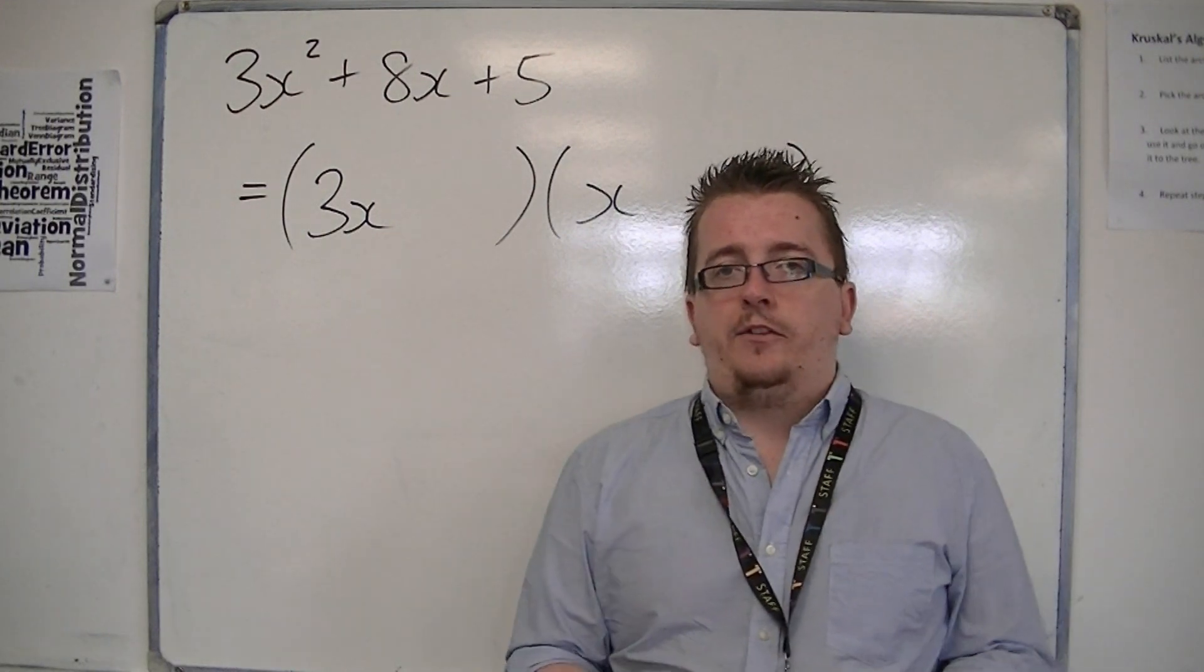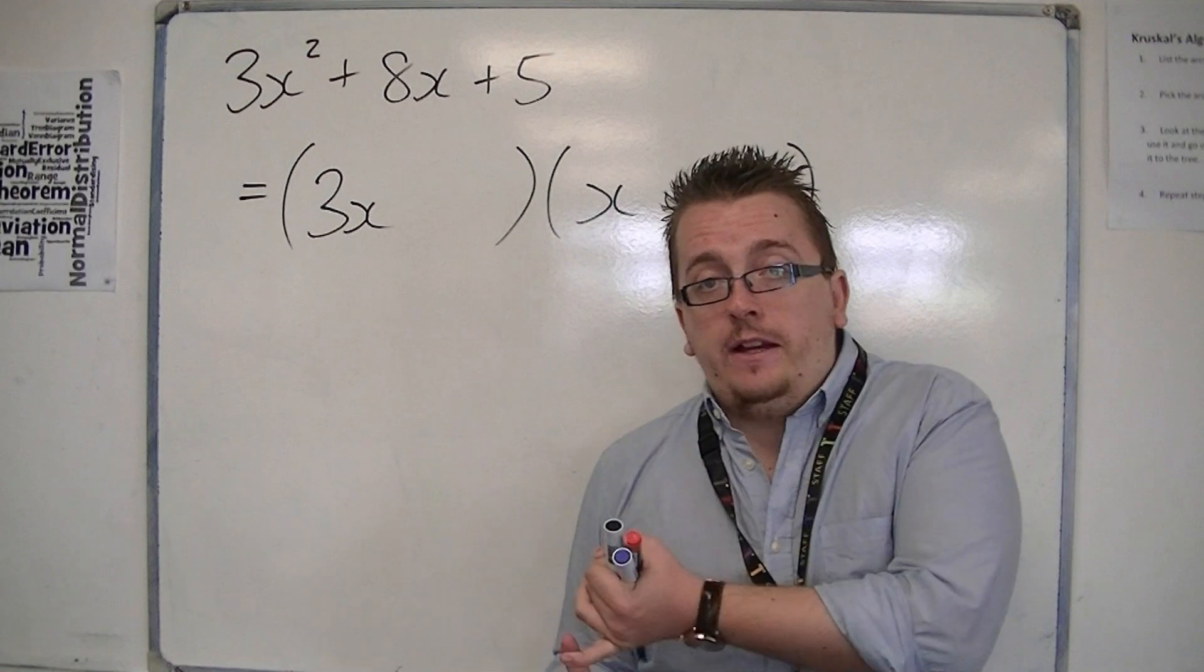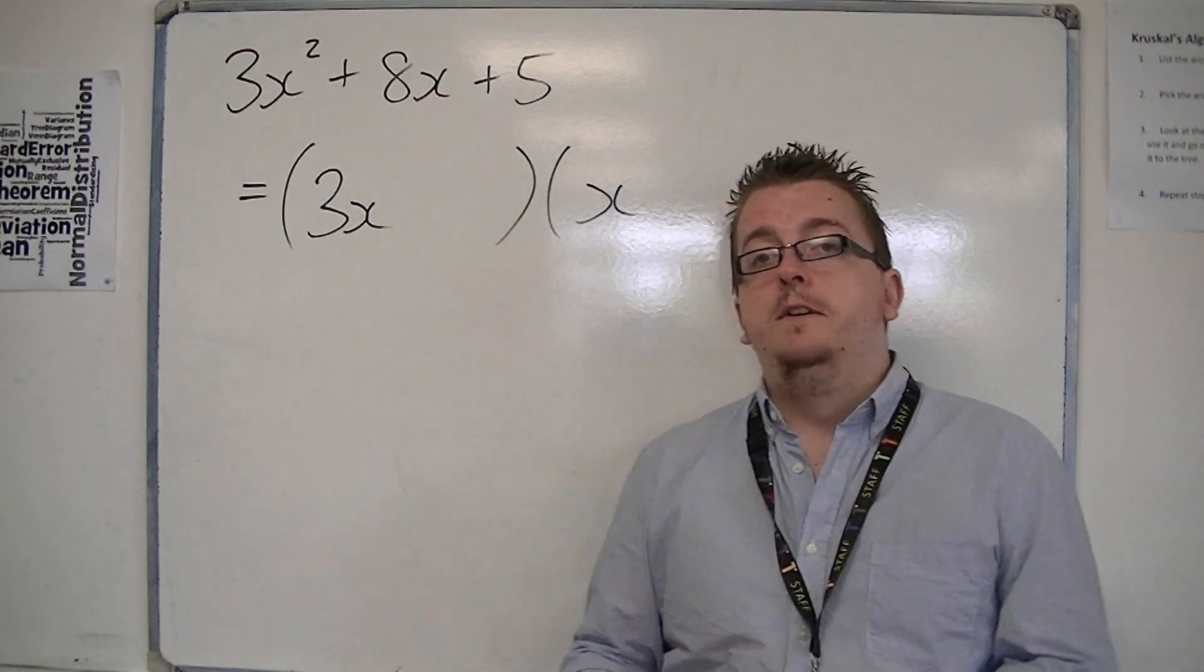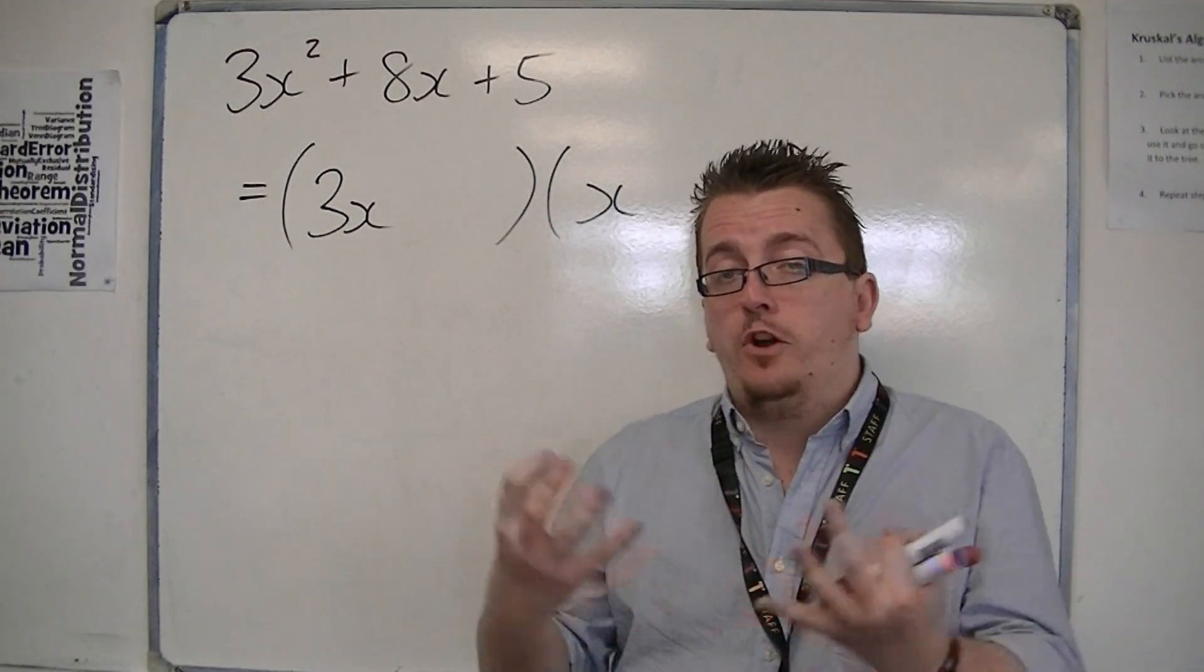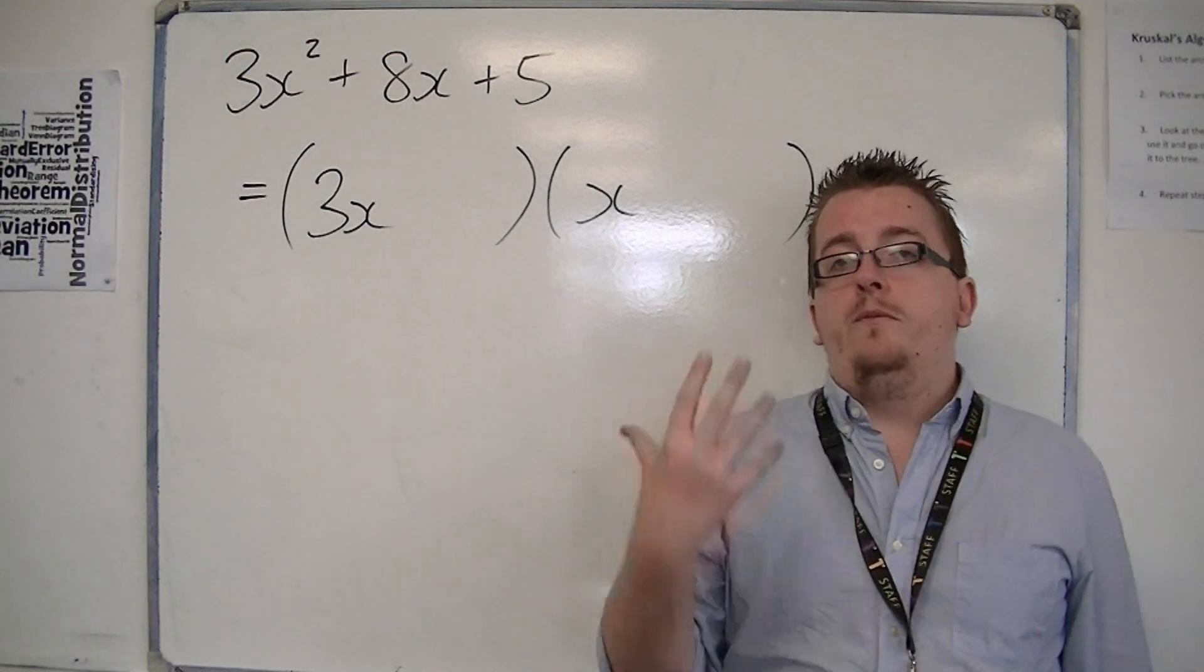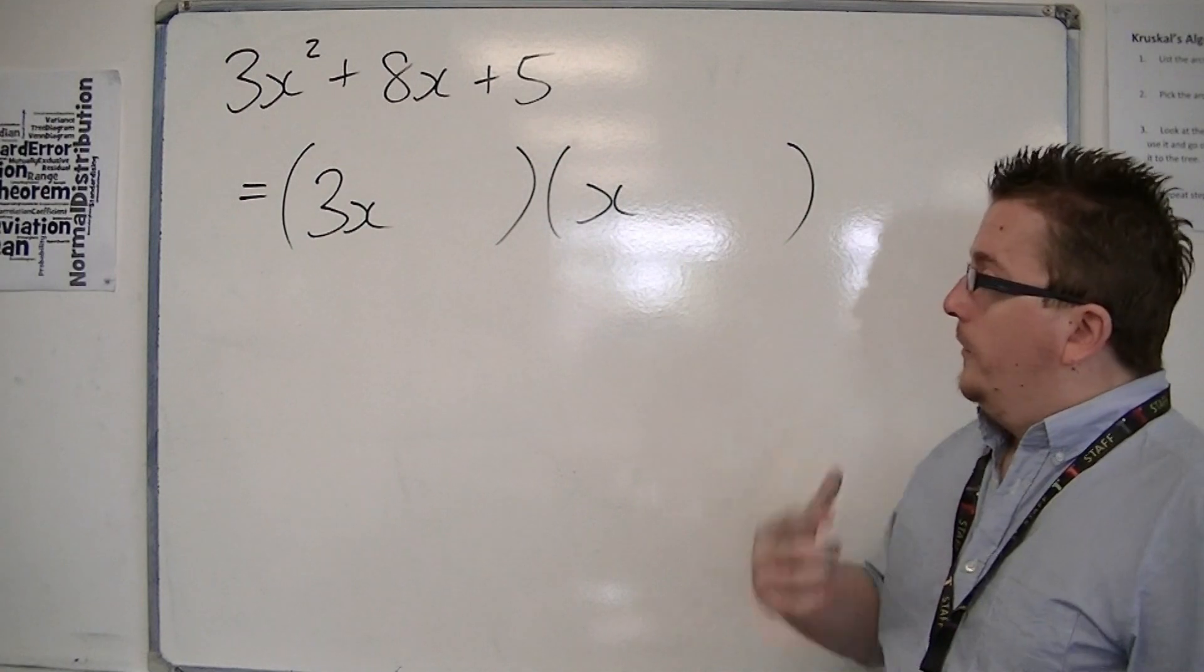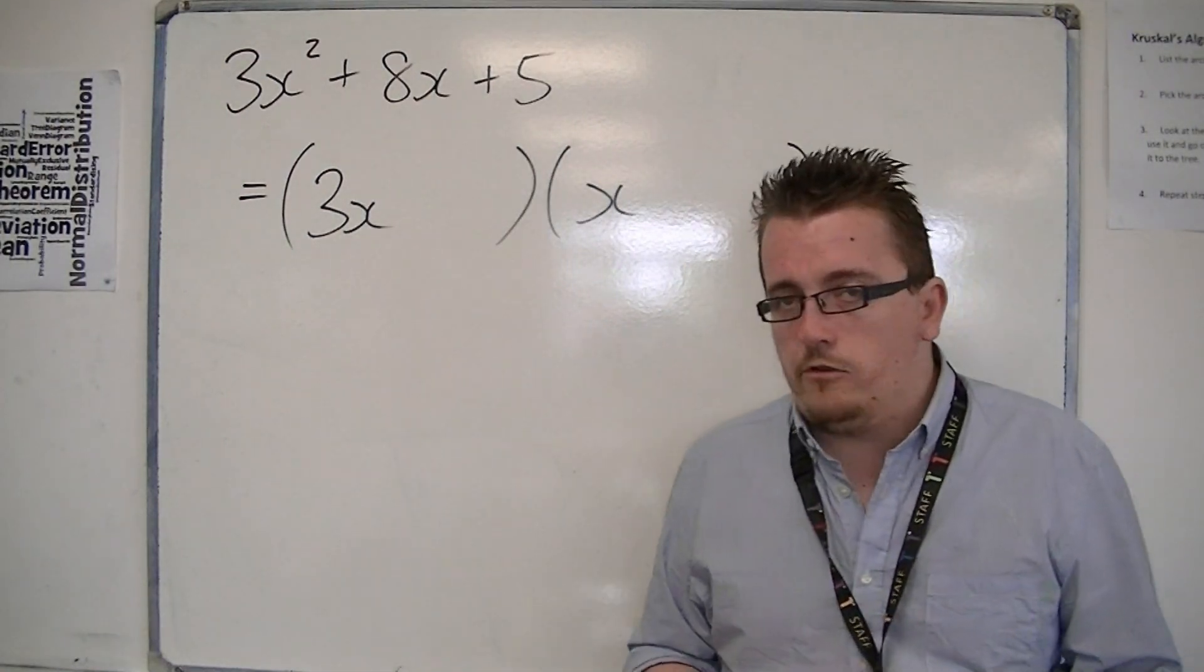But if it's 8x squared, then you've got 8x times x, you've got 4x times 2x. So you've got different combinations. If you get to 16x squared, you've got even more combinations. And that's a problem. And that's why students worry, because then it's like trial and error.